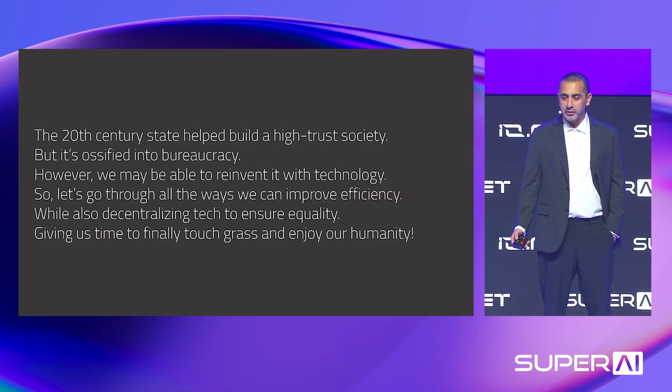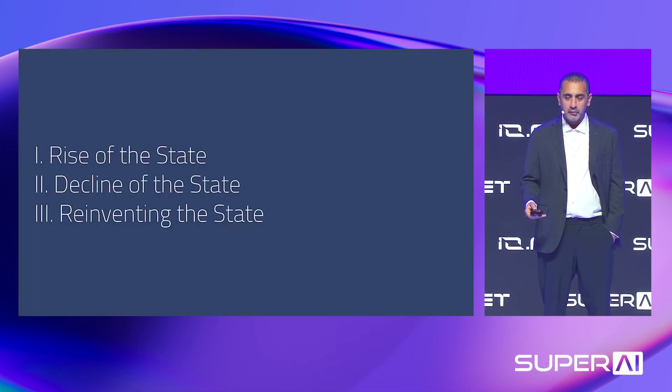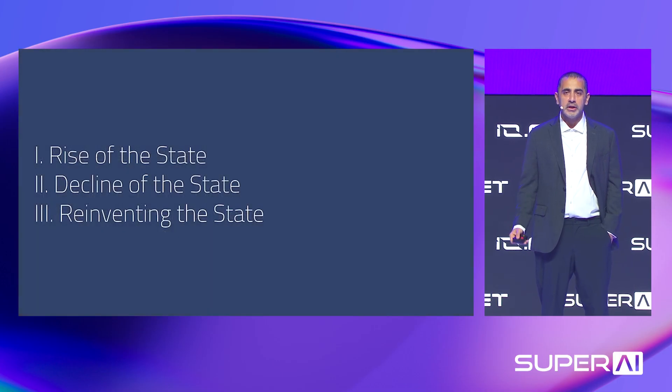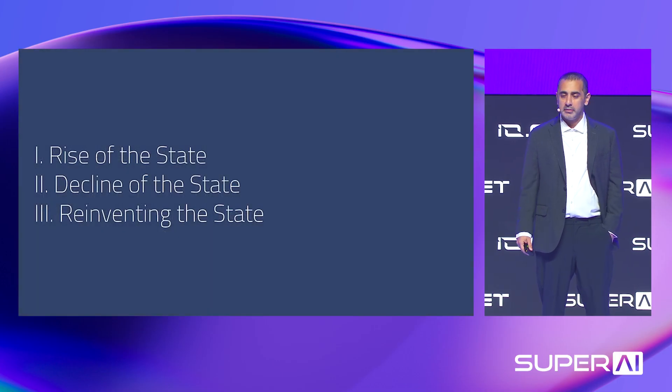So there are three sections: the rise of the state, the decline of the state, and then reinventing the state. Let's start with that first.